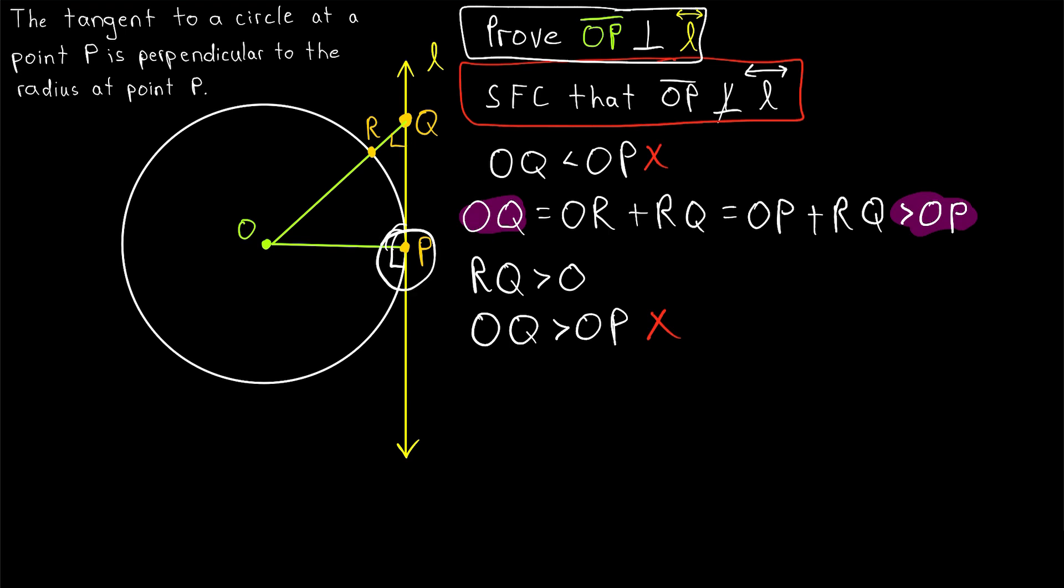So, the line tangent to a circle at a point P is perpendicular to the radius at point P. If you draw a radius to a tangent, they'll meet at a right angle.